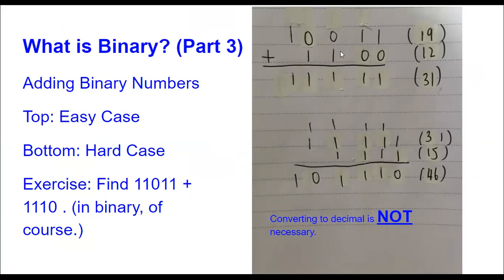I wrote down the addition on a piece of paper and note that converting to decimal is not necessary. 10011 plus 1100: you just do 1 plus 0 is 1, 1 plus 0 is 1, 0 plus 1 is 1, 0 plus 1 is 1, and 1 plus 0 is 1.